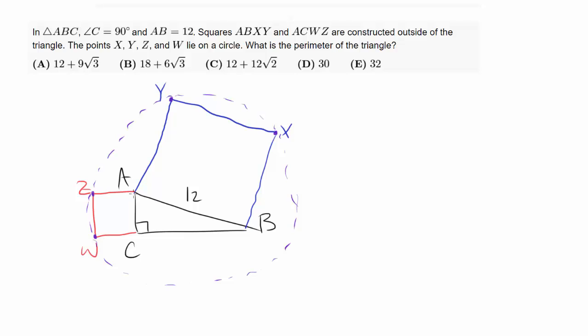Let's start by labeling some sides. Let's call this side B because it's opposite angle B and let's call this side A. And we want to find A plus B plus 12 or the perimeter of the triangle.